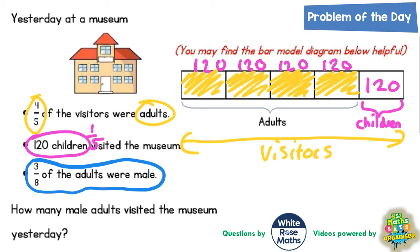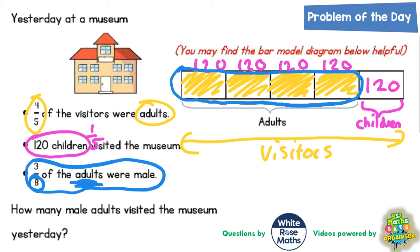Now we're told that three-eighths of the adults were male. This is saying three-eighths of the adults, so we're only focusing on the adults. The adults section has four sections, but we need eight sections because it says three-eighths. So those four sections can be split into eight quite easily by splitting each one in half. If each section was worth 120, when you split it in half, each one is now worth 60.